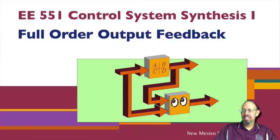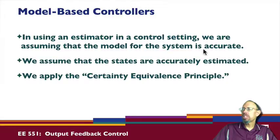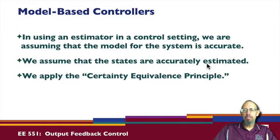In this topic we're going to talk about full order output feedback. This approach is something called a model-based controller — we're using an estimator in the control setting, assuming that the model for the system is fairly accurate, and we use that model in designing our estimator. When we get our estimator, we assume that the states are accurately estimated and thus can be used as if we were doing state feedback.